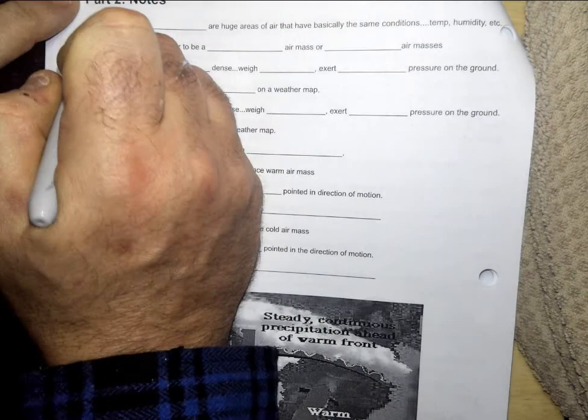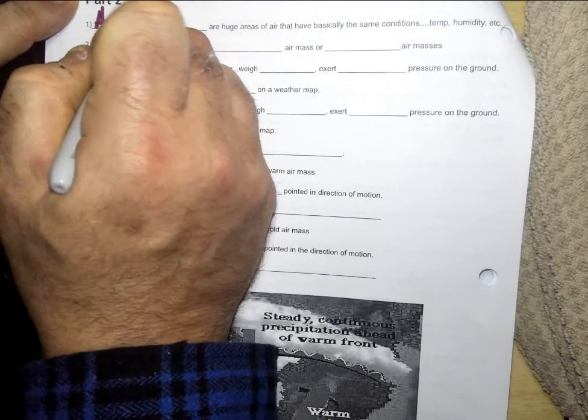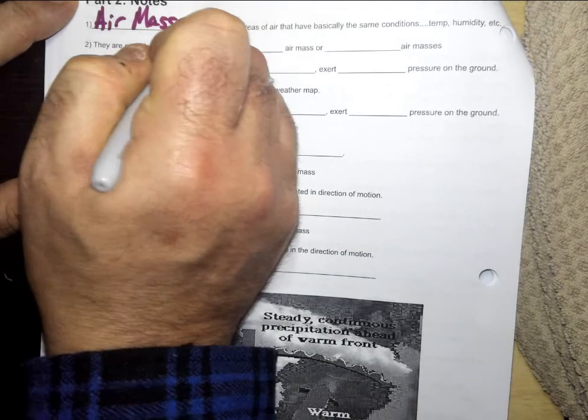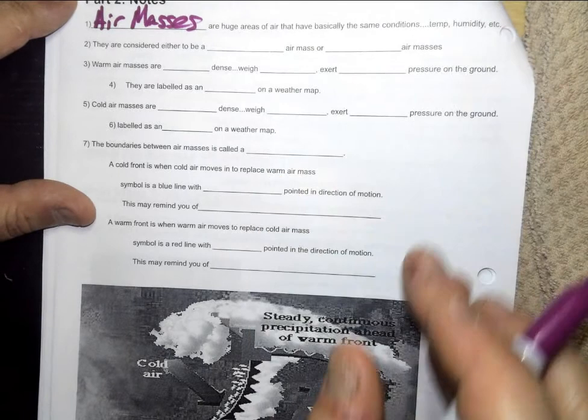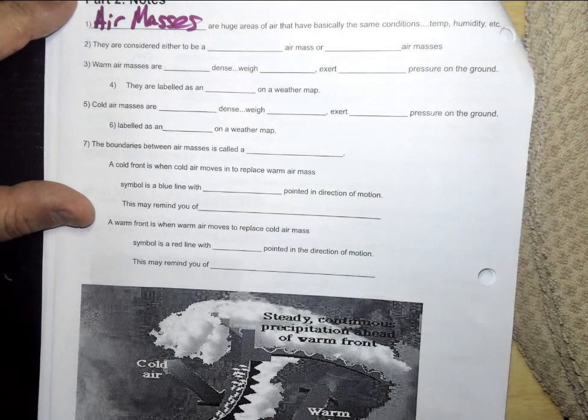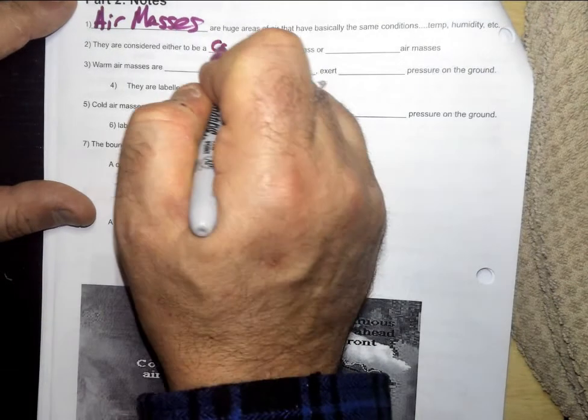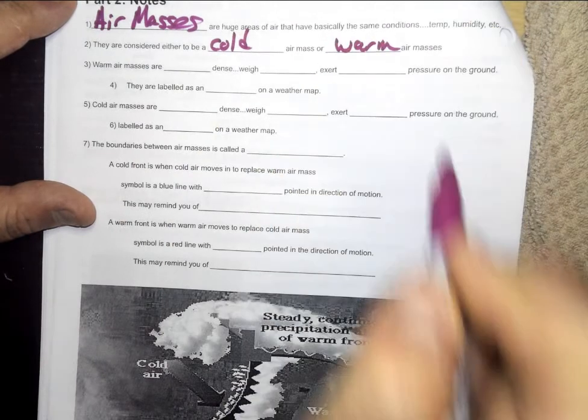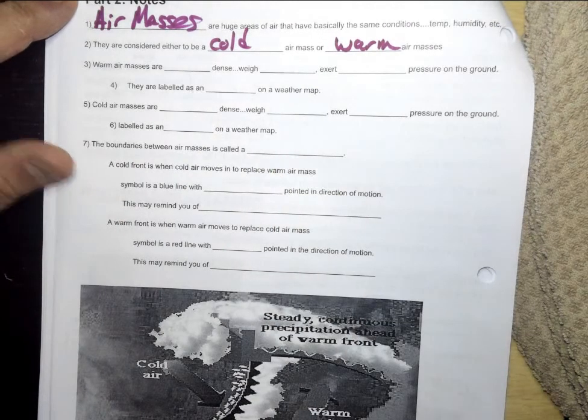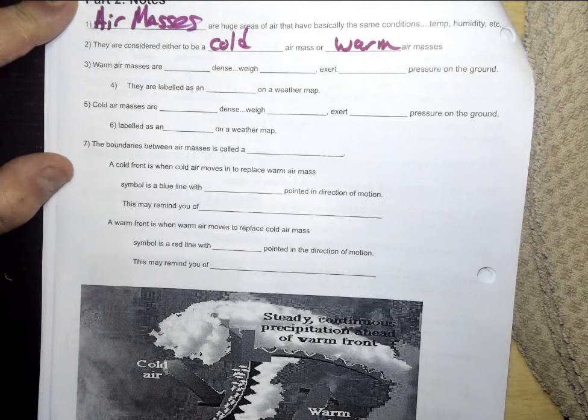Air masses are huge areas of air that have basically the same conditions, the same temperature, the same humidity, etc. They are considered either to be a cold air mass or a warm air mass. We don't have medium warm air masses. We don't have hot air masses. We just call them cold or warm.